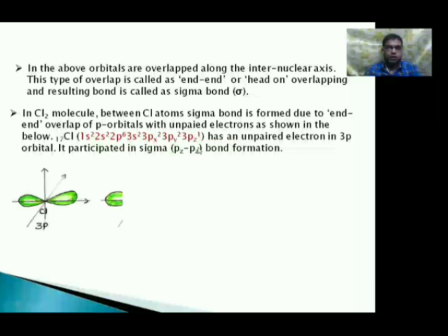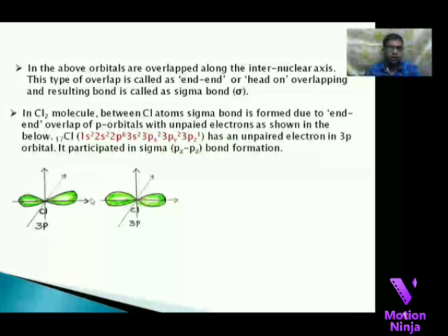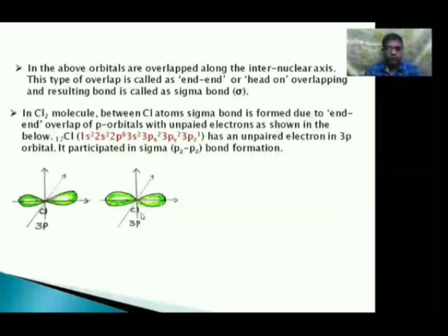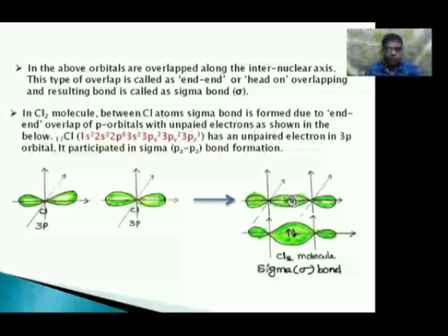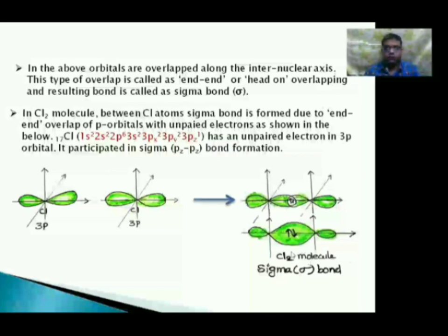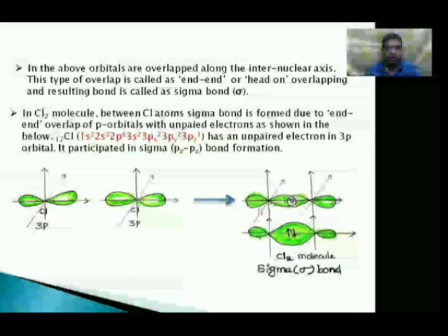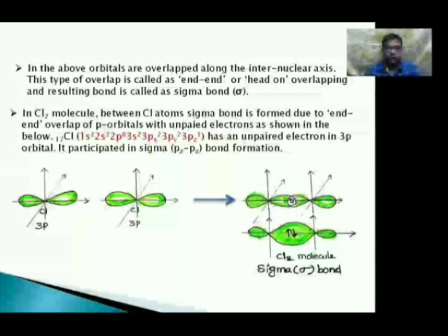The 3p atomic orbital of one chlorine atom overlaps with the 3p atomic orbital of another chlorine atom. The electrons present in these atomic orbitals must contain opposite spins. This overlapping of p atomic orbitals results in the formation of a sigma bond, because the orbitals participate in end-to-end or head-on overlapping along the internuclear axis.